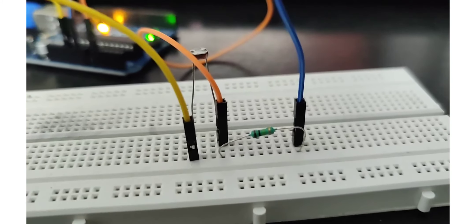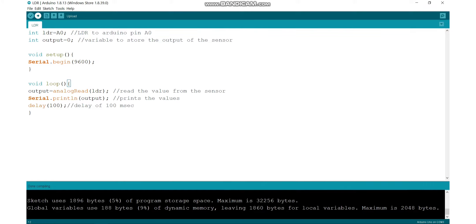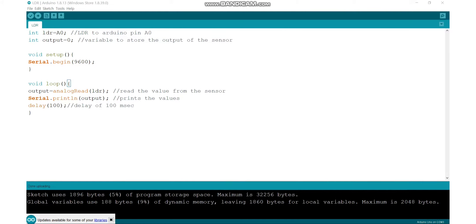Coming to my code: LDR represents the analog pin, and output is a variable to store the output of the sensor. In the loop, I read the values and store them in output, then print the output with a delay of 100 milliseconds, that is 0.1 seconds. Now I'm going to verify and dump the code. It is successful, and now I'm going to open my serial monitor in the top right corner.